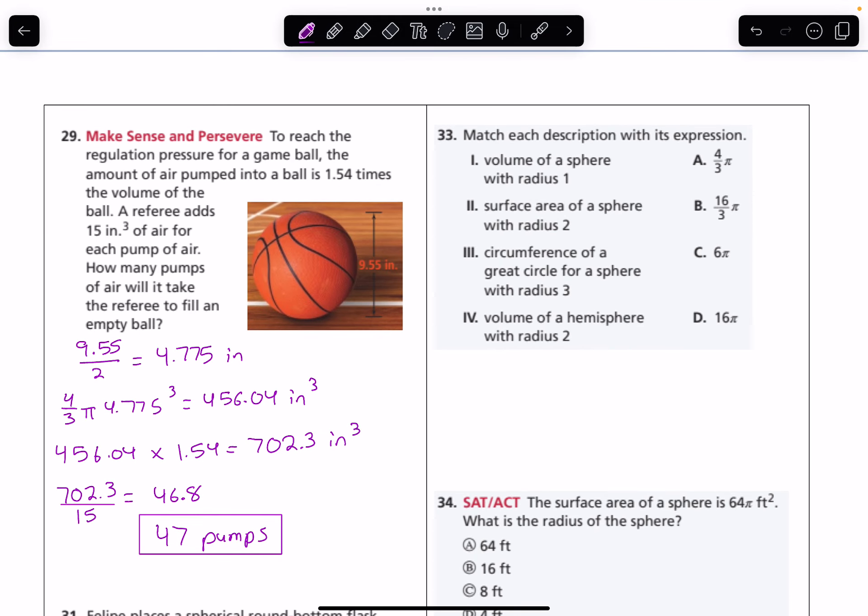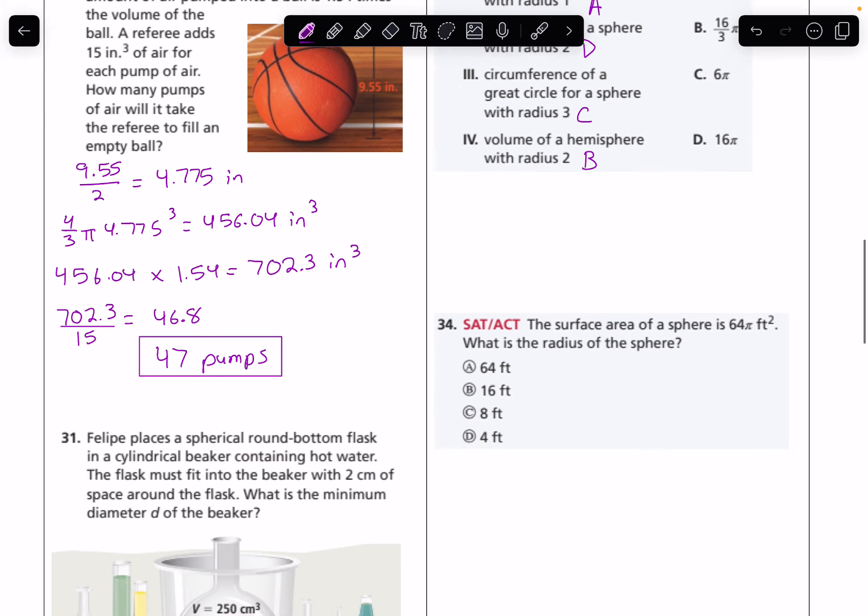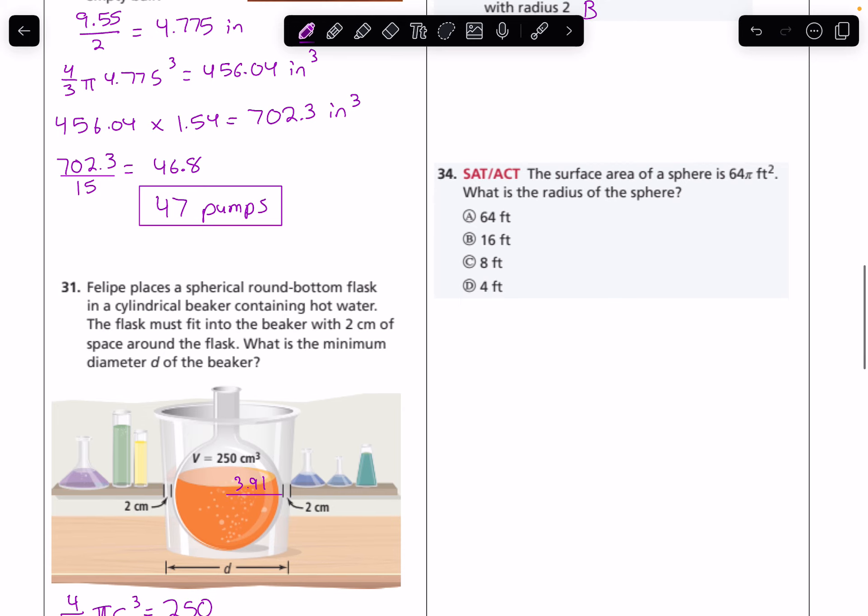Number 33, match each description with its expression. When we do that, we should get A, D, C, and B. We can calculate all of those out. And then 34, the surface area of a sphere is 64π. What is the radius? That means 4πr² equals 64π. I'm going to divide both sides by 4π. And I'm going to get r² equals 16. And then I take the square root, and I find that r equals 4. And your answer is D.